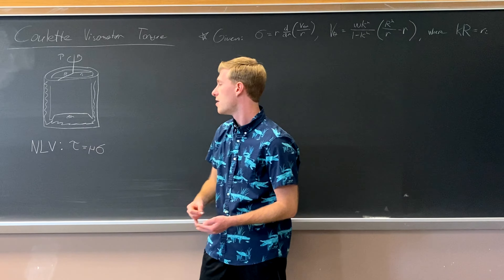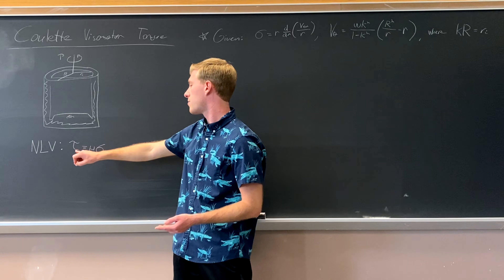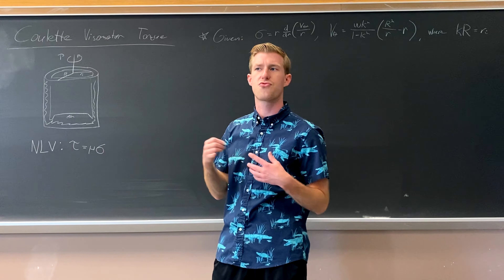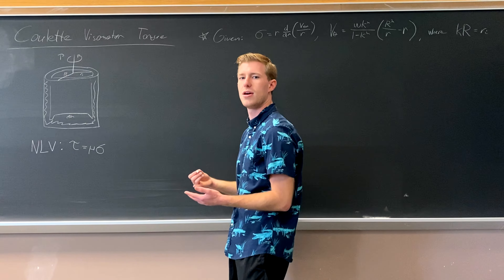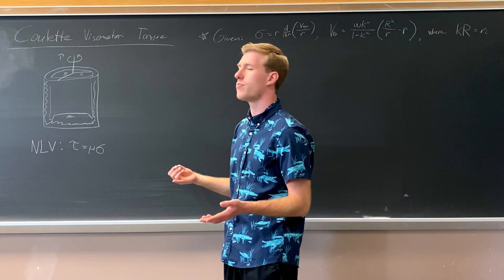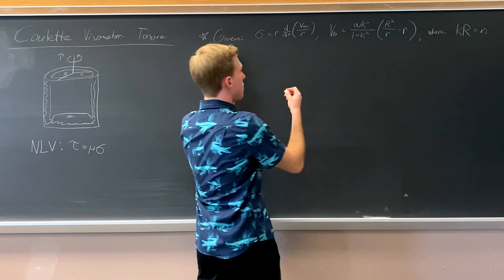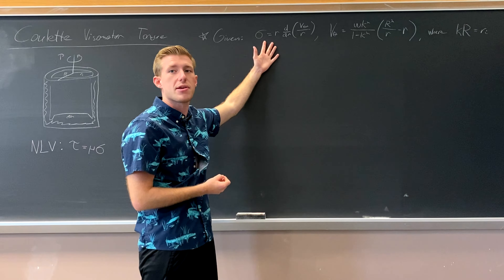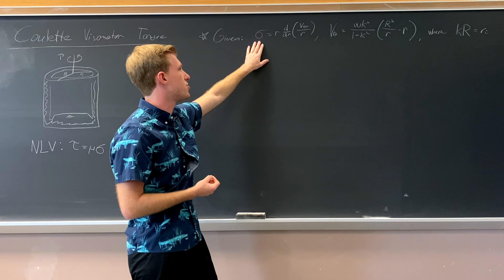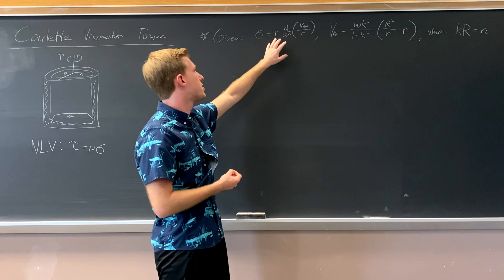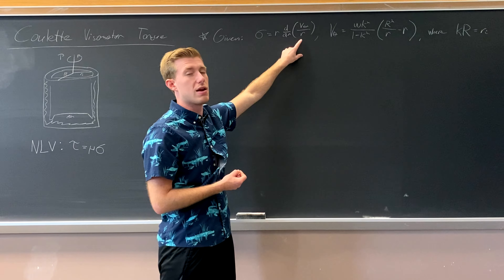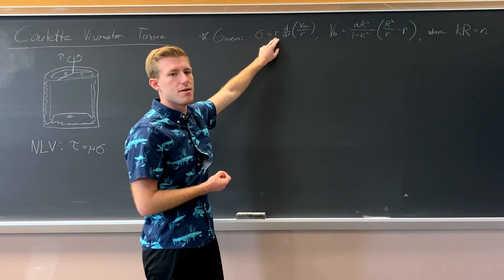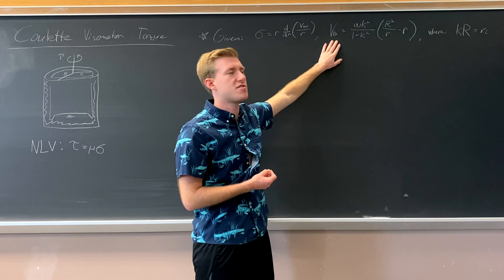Back to Newton's Law of Viscosity — the shear force equals mu, the viscosity, times the shear rate. Now because we're working with cylinders and can't truly approximate it as Cartesian, we're given a formula that tells us what the shear rate is actually calculated as for the cylindrical situation. Instead of just being the derivative of v_theta, it's the derivative of v_theta divided by whatever radius we're looking at, then multiplied by the radius back in. And v_theta for our cylinder system involves omega (angular velocity in radians per second) times k, where k is the ratio between the outer and inner cylinder.